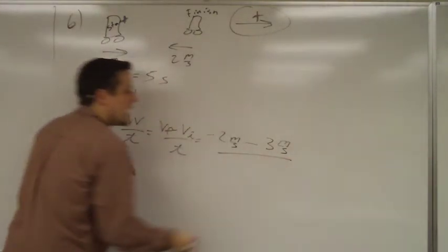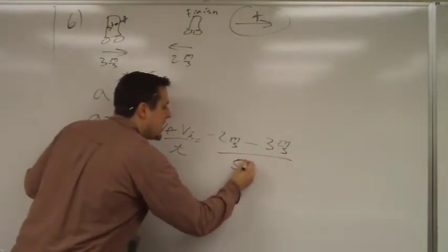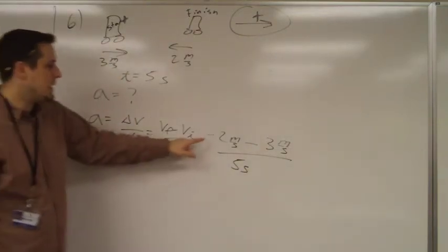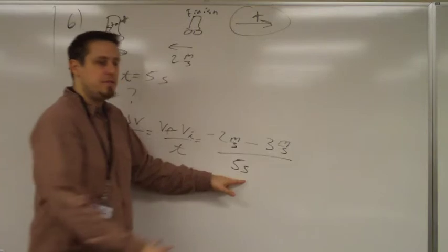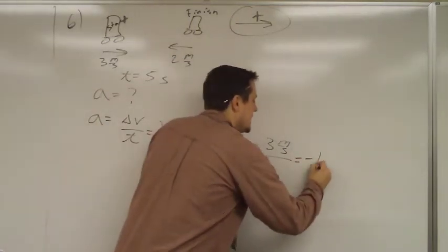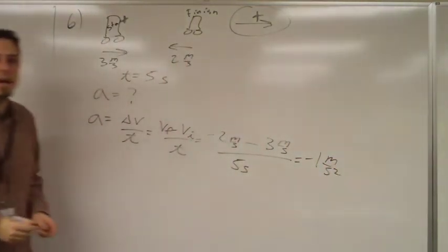Divided by the time it took for this to happen, which is 5 seconds. So what are we going to get up here? Negative 5 divided by 5 will give us negative 1, negative 1 meters per second squared.